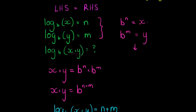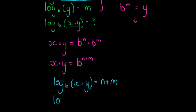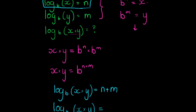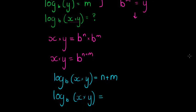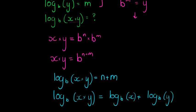But right in the beginning, we said that n is equal to this. So everywhere where we see an n, we can replace this expression. So log of b, x times y instead of n, n is equal to log b of x, log b of x. And m is equal to log b of y, plus m, which is log b of y.